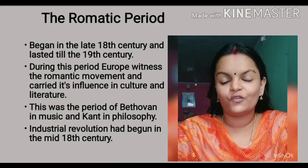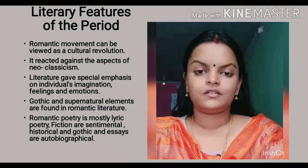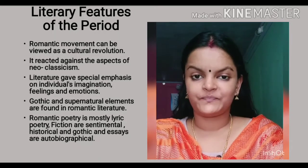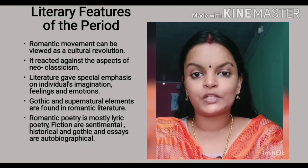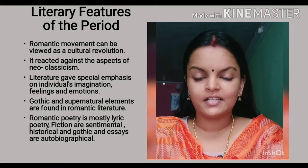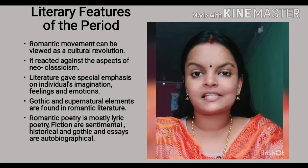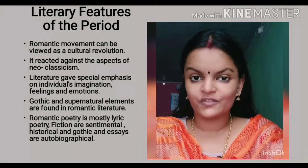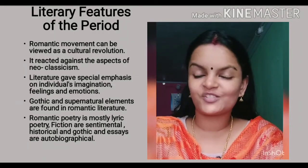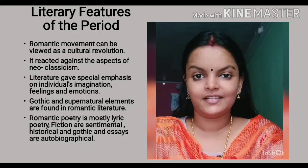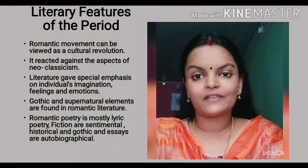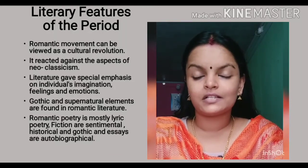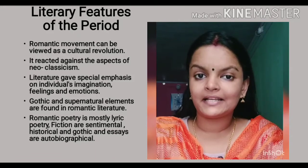Now let's check what are the literary features of the Romantic age. The Romantic movement can be viewed as a cultural revolution — it reacts against the aspects of neoclassicism. In Romanticism, writers gave special emphasis on the uniqueness of individuals. That is why in literature we can see writers' emotions, imaginations and feelings. Nature and its surroundings were given special emphasis, and writers chose the language of common people in their writings.